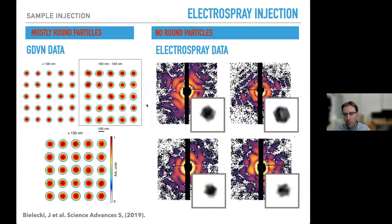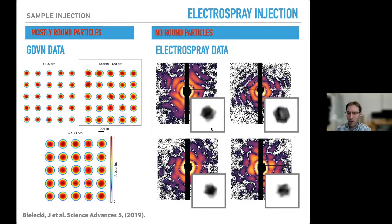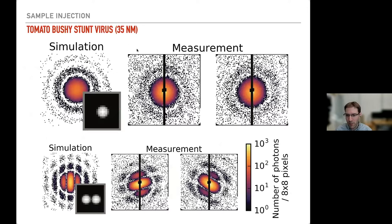Repeating the experiment using electrospray as the droplet source with the same carboxysome preparation, we got much better-looking diffraction patterns, and the reconstructions looked much more like an icosahedron. That seemed to solve one of the main difficulties in going to smaller particles. We even managed at the LCLS to look at some relatively small viruses — a 35-nanometer tomato bushy stunt virus. The measurements we got matched the expected size pretty well.